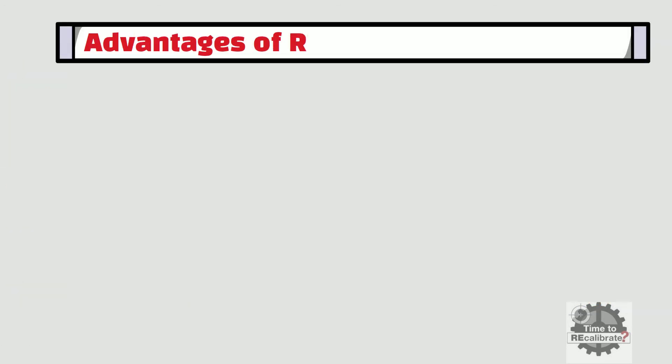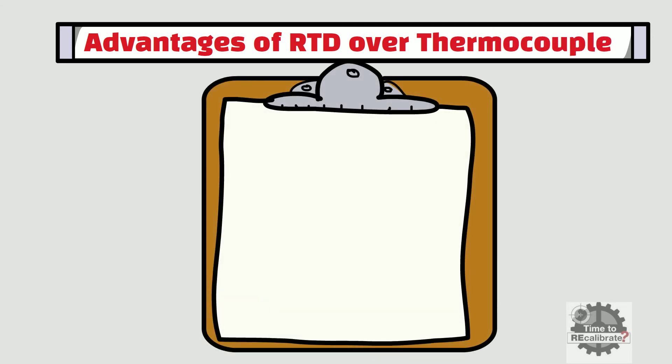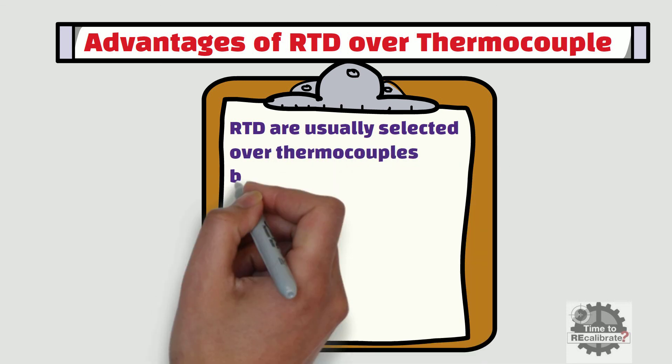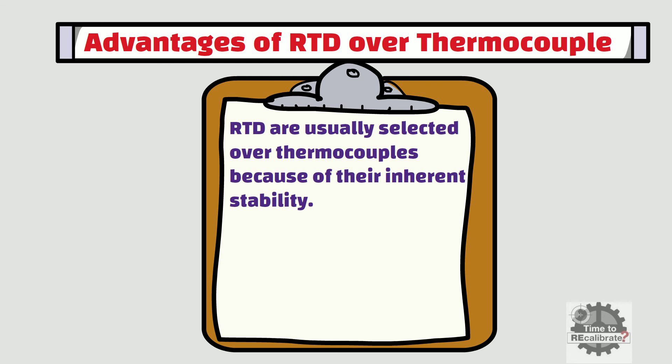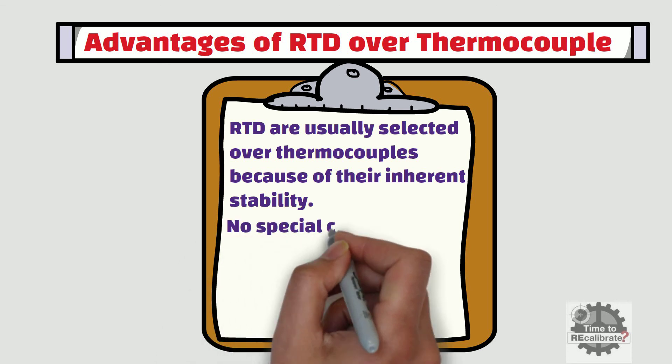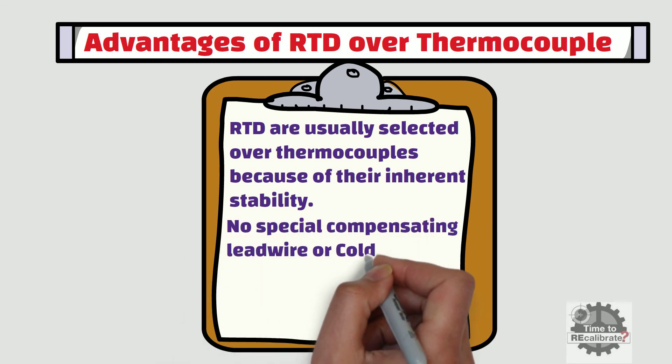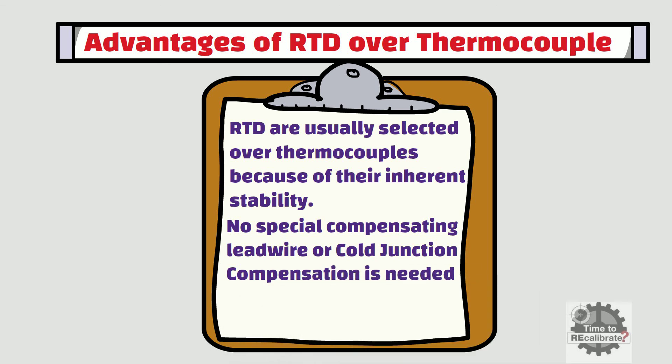Now let's learn the advantages of RTD over thermocouple. RTDs are usually selected over thermocouples because of their inherent stability. Another advantage over thermocouples is that no special compensating lead wire or cold junction compensation is needed for RTD.